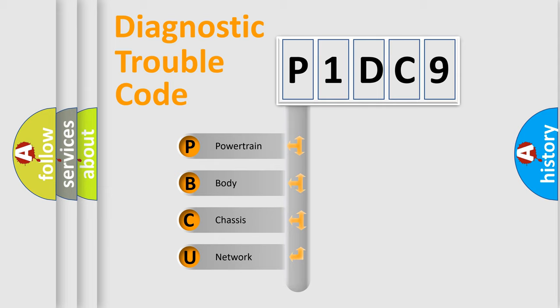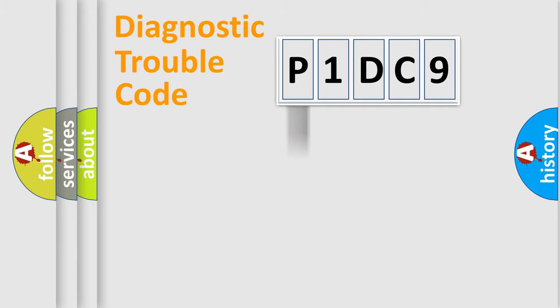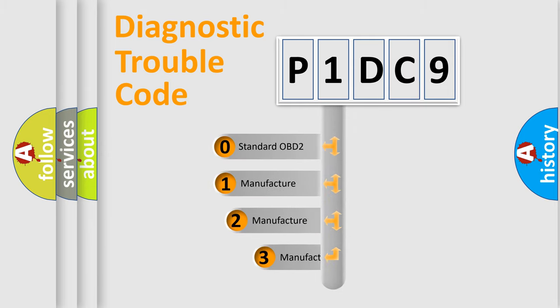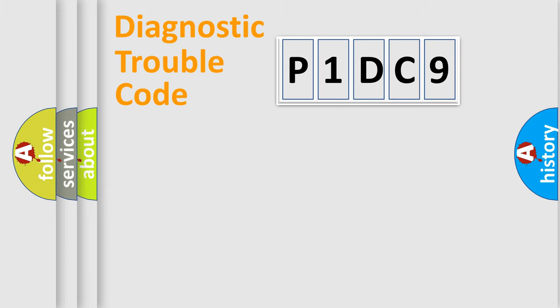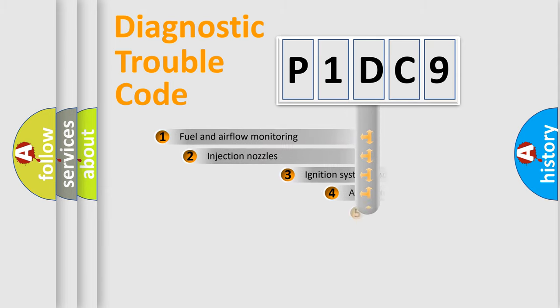We divide the electric system of automobile into four basic units: Powertrain, body, chassis, and network. This distribution is defined in the first character of the code. If the second character is expressed as zero, it is a standardized error. In the case of numbers 1, 2, or 3, it is a more specific expression of a car-specific error.